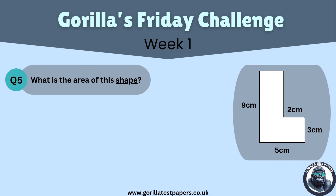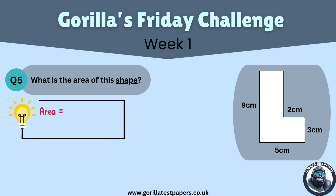Let's get into it. Since we have some missing dimensions, we first want to start by filling these in. Looking at the height of the shape, the full height is 9cm and we are given another height of 3cm. So we subtract 3cm from 9cm to find the missing dimension, which is 6cm. Looking at the total width of 5cm, we subtract the upper width of 2cm from 5cm to find the missing width, which is 3cm.